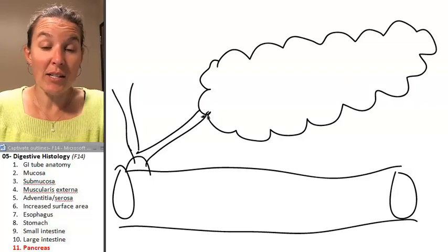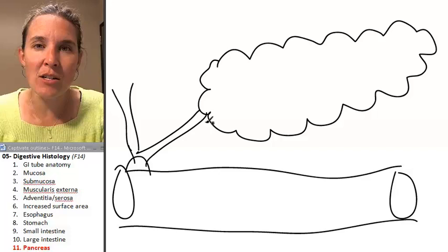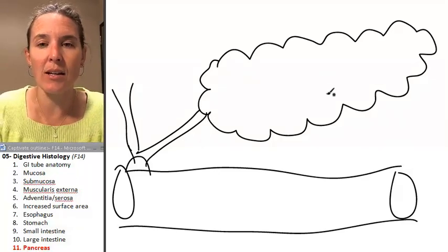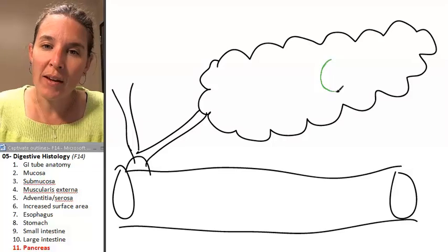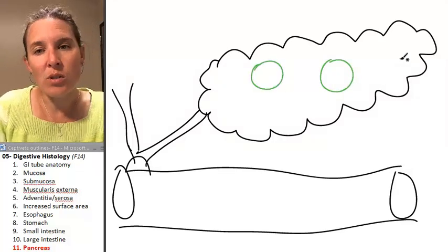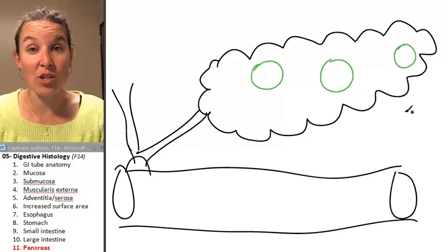Because the pancreas has exocrine tissue and endocrine tissue, there are two different structures that we're going to see in here. For one thing, we're going to see these kind of round islands.